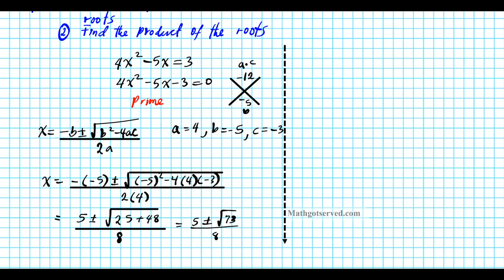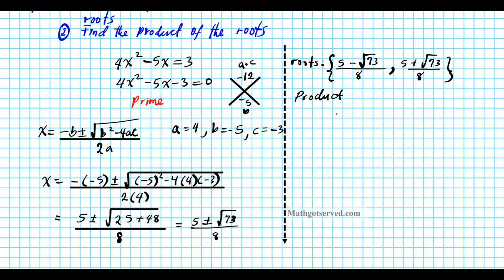Our two roots are what you get when you apply the plus or minus: the first root is 5 minus root 73 over 8, and the second root is 5 plus root 73 over 8. We were asked to find the product of the roots, so we multiply these two fractions.